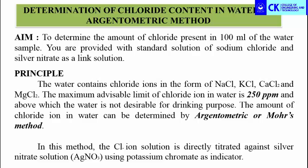Hello everyone. In this video we are going to determine the fluoride content in a water sample by argentometric method. The aim of the experiment is to determine the amount of fluoride ion present in 100 ml of water sample. You are provided with the standard solution of sodium chloride and silver nitrate as a linked solution. By titrating these two solutions, you are going to determine the strength of fluoride ion in the unknown water sample.